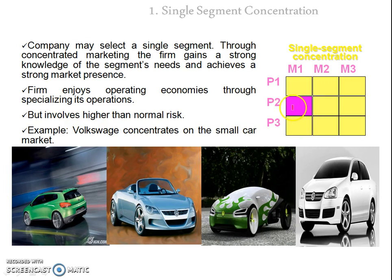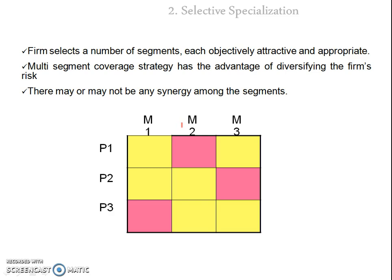The second strategy is selective specialization. Here the company selects two or three segments in different markets and manufactures different kinds of products. For example, manufacturing P1 for M2, P2 for M3, and P3 for M1. The major advantage is that risk has been diversified — if one segment doesn't work well, the other segments can cover up that risk, removing the key limitation of single segment concentration.